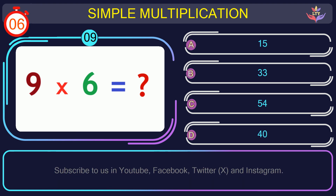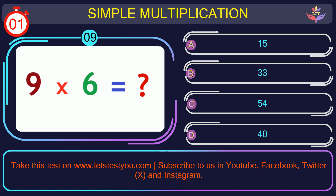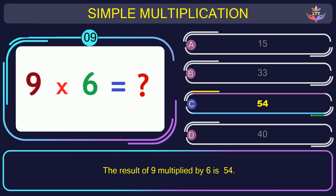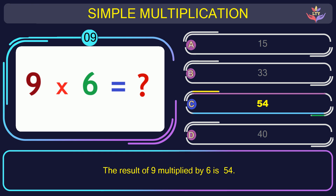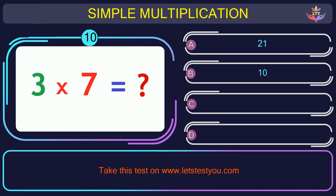Question number 9: could you guess the result when you multiply 9 and 6? The correct answer is option C: 54. The result of 9 multiplied by 6 is 54.